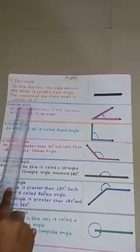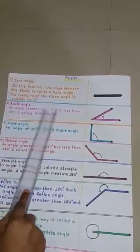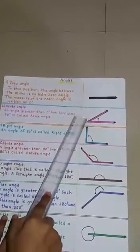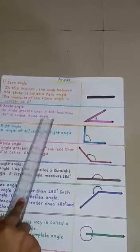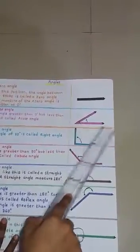2. Acute angle. An angle greater than zero degrees but less than 90 degrees is called an acute angle. This is an acute angle.